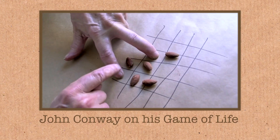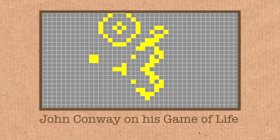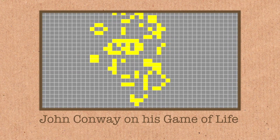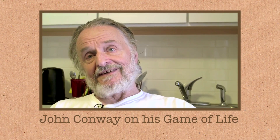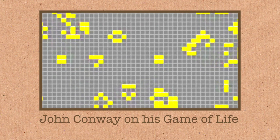Langton's Ant is an example of what's called a cellular automaton. It's a bit like the Game of Life — you've got a grid of squares, and the squares change colour depending on what's going on. In the Game of Life, the whole thing has a set of rules and everything changes at the same time.